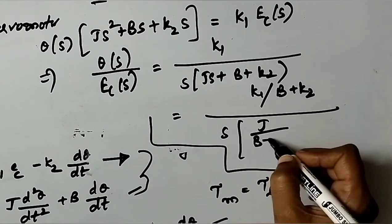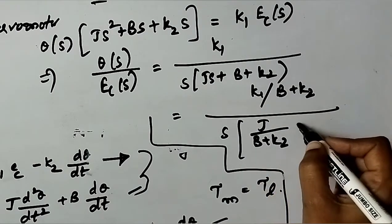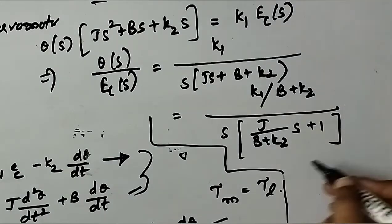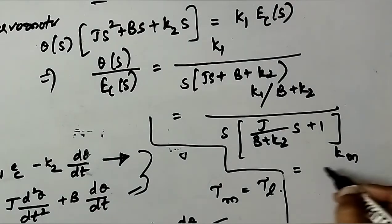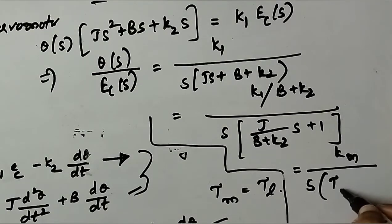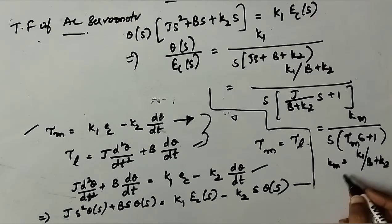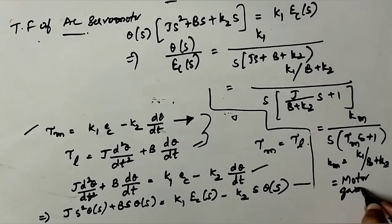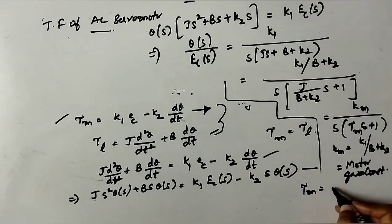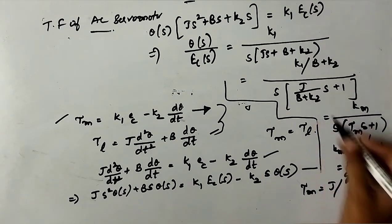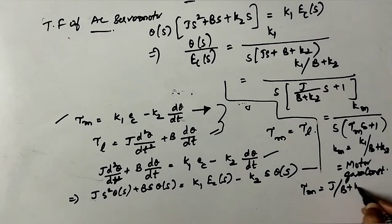That is equal to Km/(s(τm·s + 1)). Km = K1/(B + K2) is motor gain constant. τm = J/(B + K2) is motor time constant. So, this is the transfer function for AC servo motor.